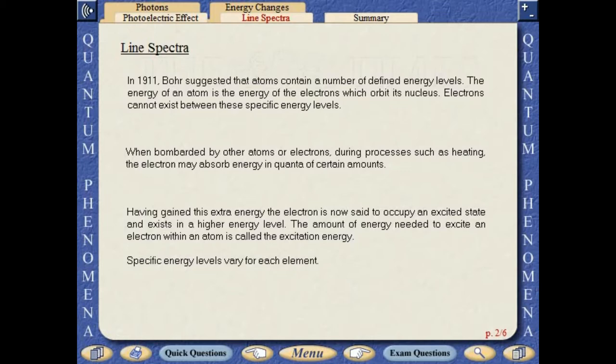When bombarded by other atoms or electrons during processes such as heating, the electron may absorb energy in quanta of certain amounts. Having gained this extra energy, the electron is now said to occupy an excited state and exists in a higher energy level. The amount of energy needed to excite an atom is called the excitation energy.